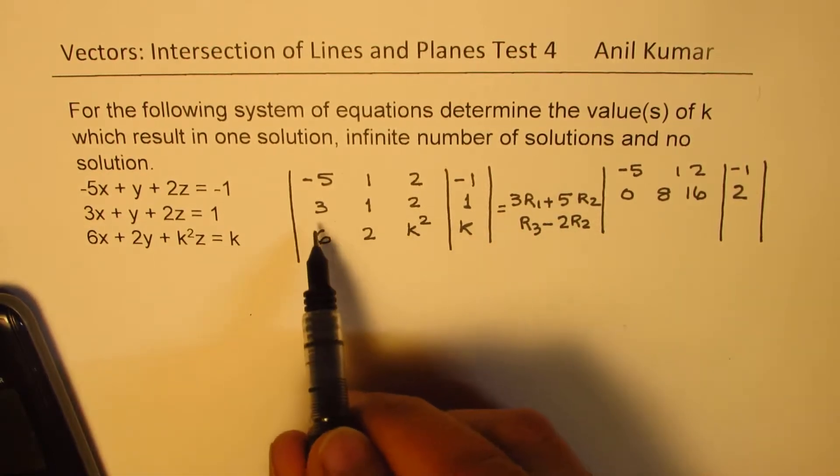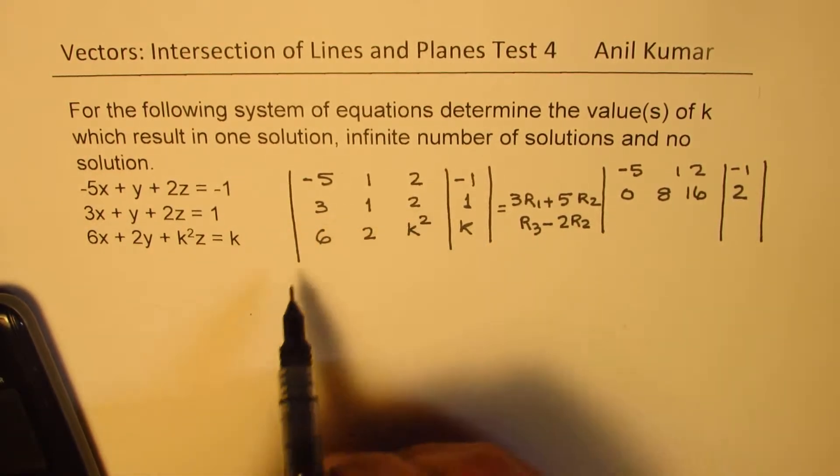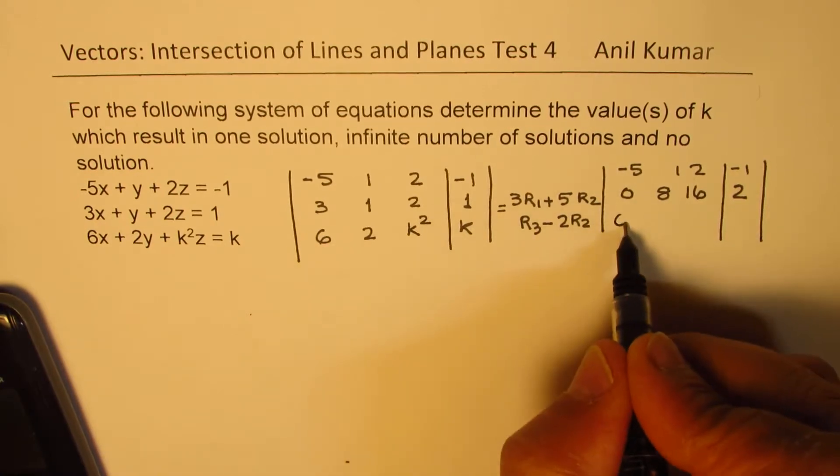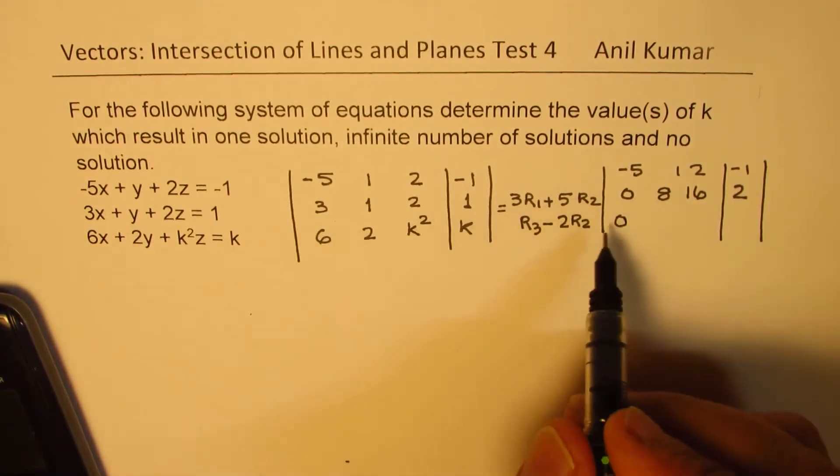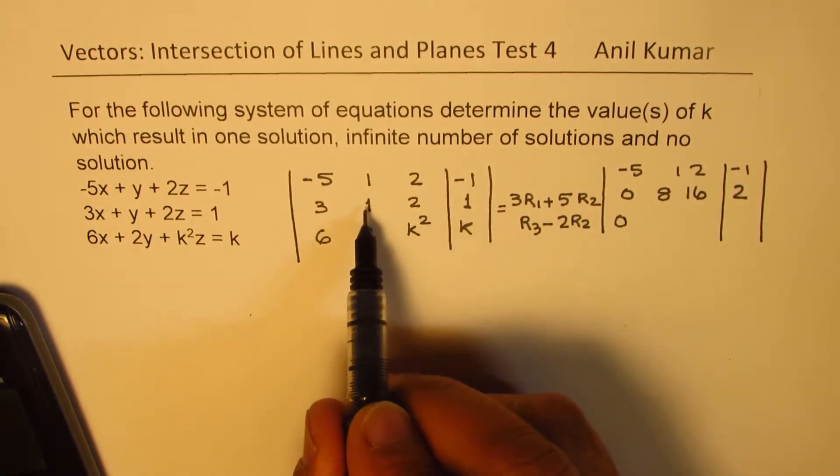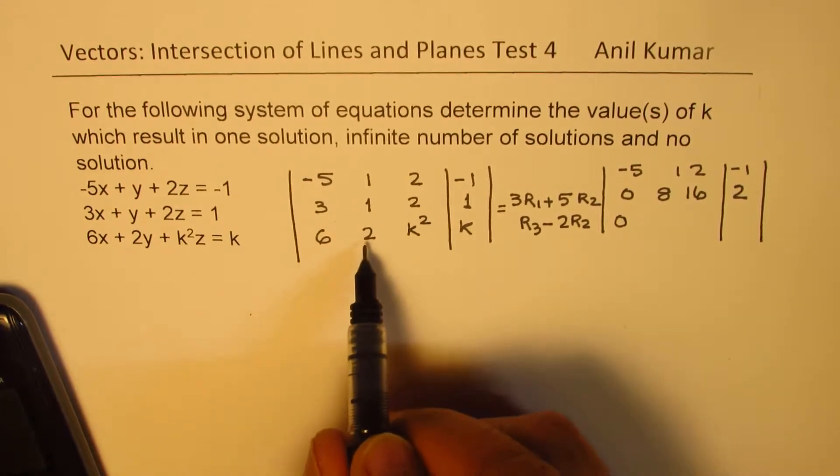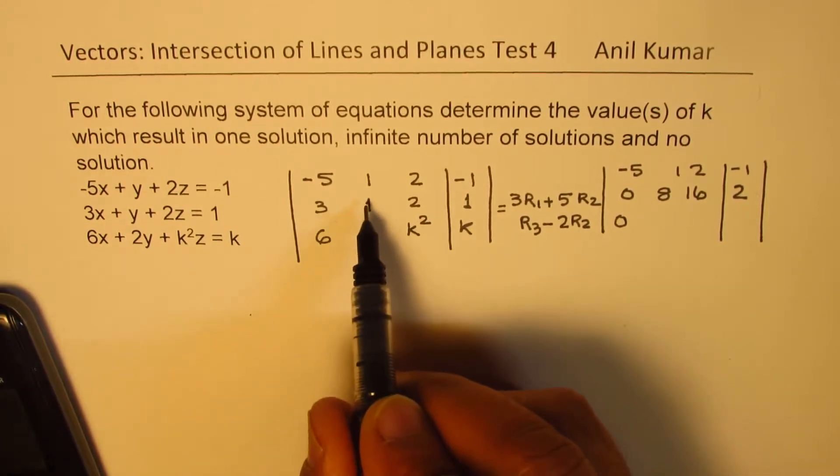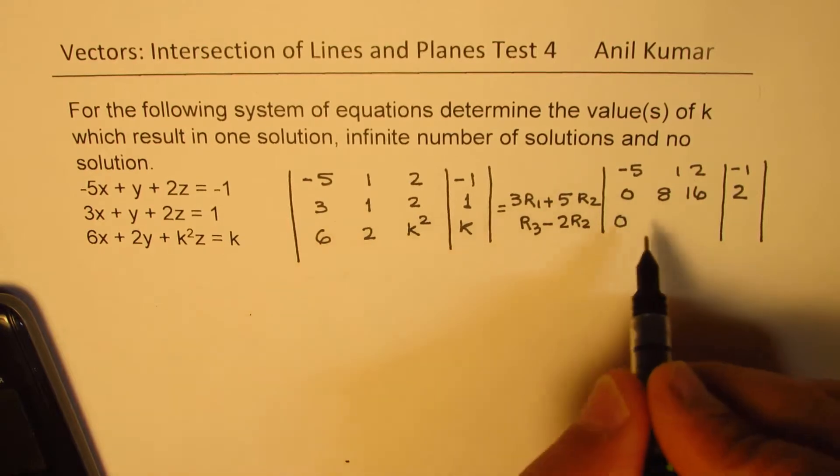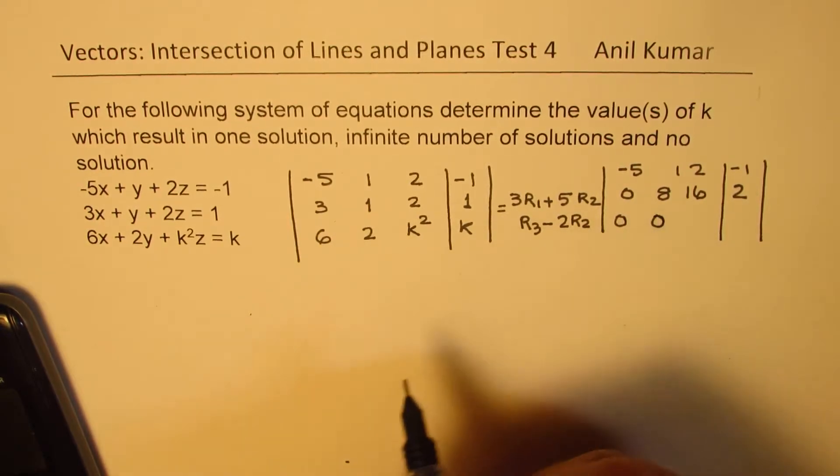we are multiplying this equation by 2. So if I do that, I get this as 0 taking away. Now, 2 times this is 2, and when I take 2 from this 2, we again get 0.